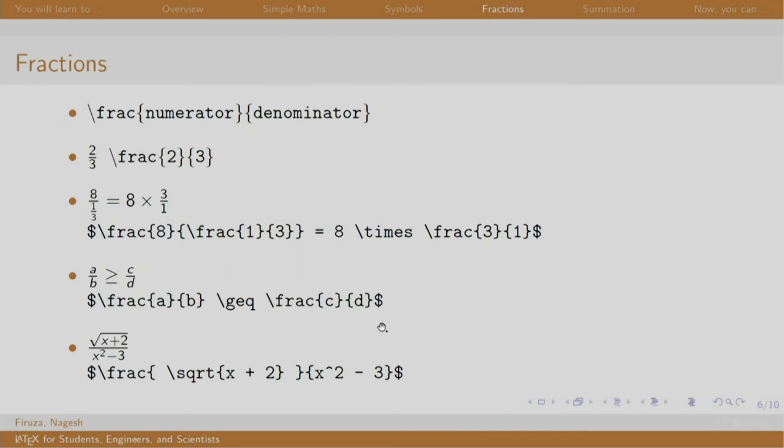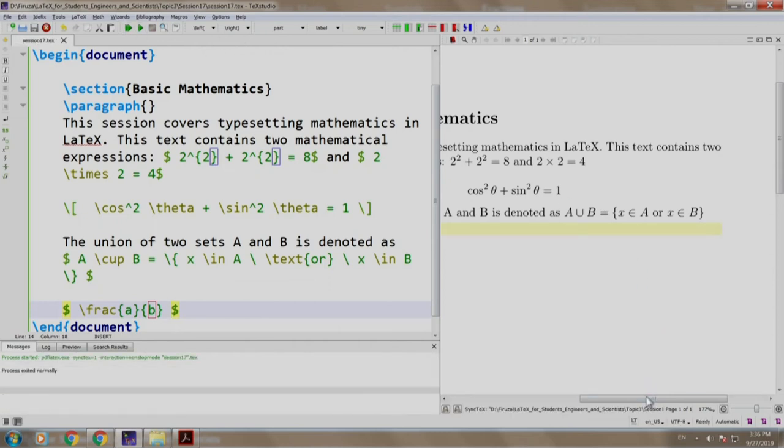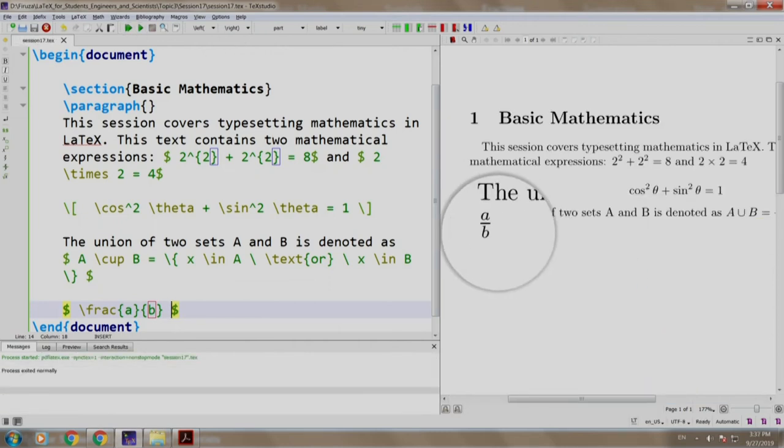Fractions are typeset using the command slash frac and mentioning the numerator and the denominator in the respective curly braces. You can see a list of different fractions typeset using latex and its commands. A good practice is to write the syntax of a command first and then start filling the numbers. Let us write slash frac and I press enter which gives me the basic syntax. Let us fill up the numbers. In the numerator I write a and in the denominator I write b. Build and run. We have a fraction a by b.